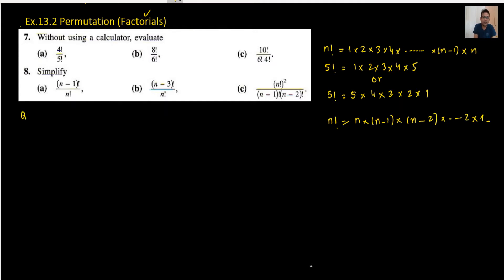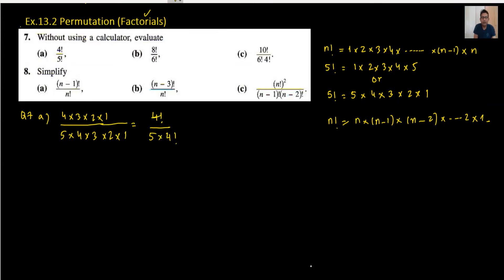Moving to question number 7. Part A: 4 factorial divided by 5 factorial. 4 factorial is 4 times 3 times 2 times 1, and in the denominator 5 factorial is 5 times 4 times 3 times 2 times 1. We can also write this as 4 factorial divided by 5 times 4 factorial, so 4 factorial cancels out and the answer is 1 over 5.